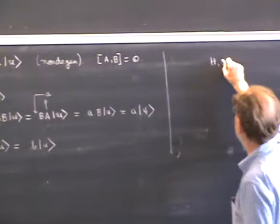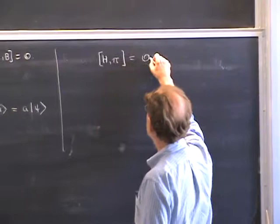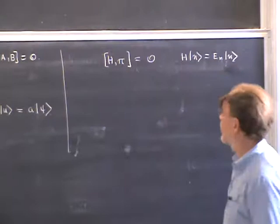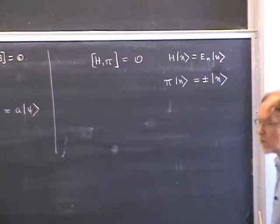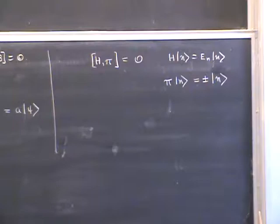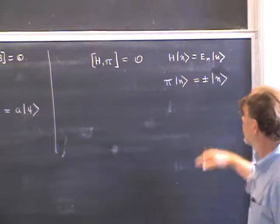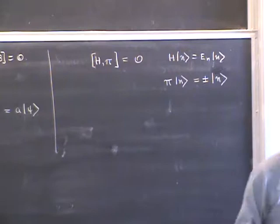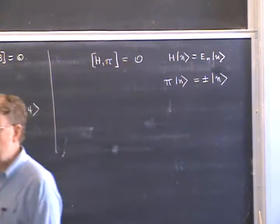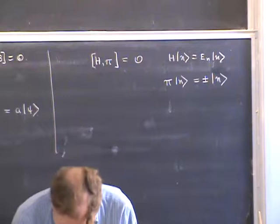As an example, suppose we have a Hamiltonian which commutes with parity — a very common situation in quantum mechanics. If a non-degenerate energy eigenstate N satisfies H|N⟩ = E_N|N⟩, then N is also an eigenstate of parity with eigenvalue plus or minus one. For example, the harmonic oscillator has non-degenerate eigenstates and commutes with parity. According to this theorem, all harmonic oscillator eigenstates are also eigenstates of parity. The fact that even ones are even and odd ones are odd requires working with the harmonic oscillator specifically, but the fact that they are parity eigenstates follows from this theorem.